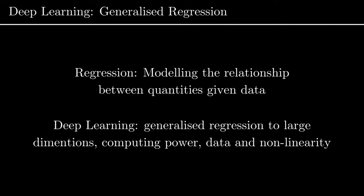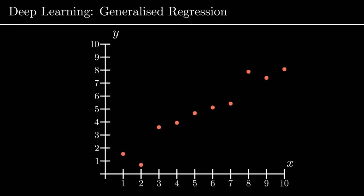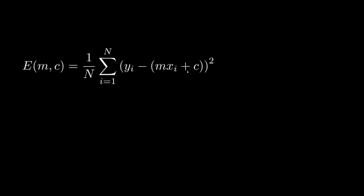Let's go over the simplest possible example we can imagine first. If we had a one-dimensional problem where we have some x quantity and y quantity with some data points we'd collected from the world, the idea is: given this data, if we could construct a simple model we could ask — given a new x point, what would be the expected value of the y point? One way we could do this is linear regression: a model which is simply a straight line with a gradient and a y-intercept, and we want to learn the parameters of this model — the gradient m and the y-intercept c — such that it most accurately reproduces our data points xi and yi.